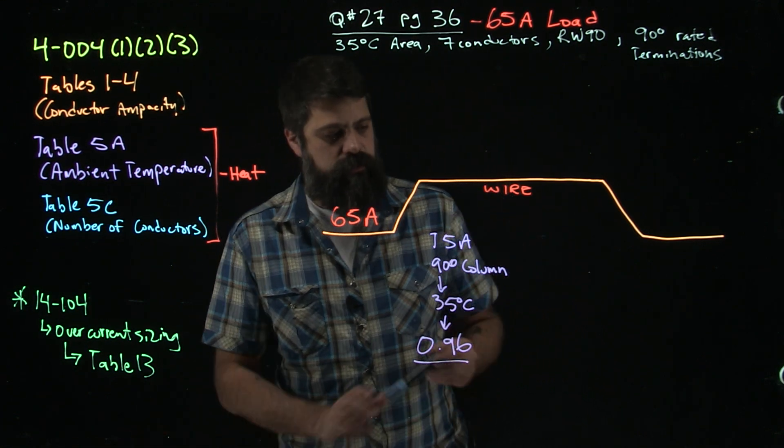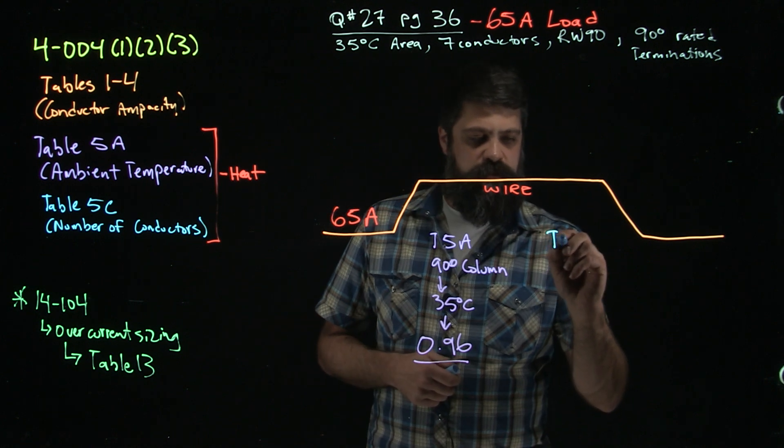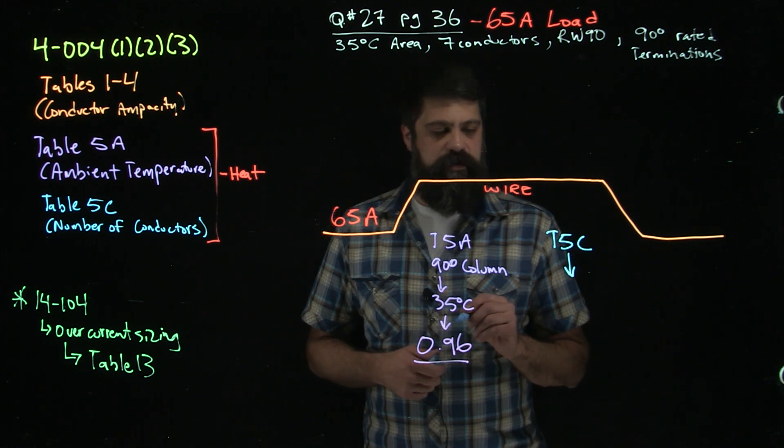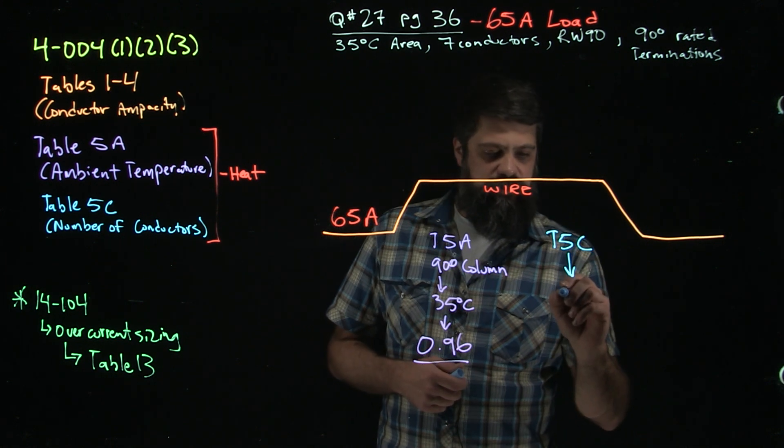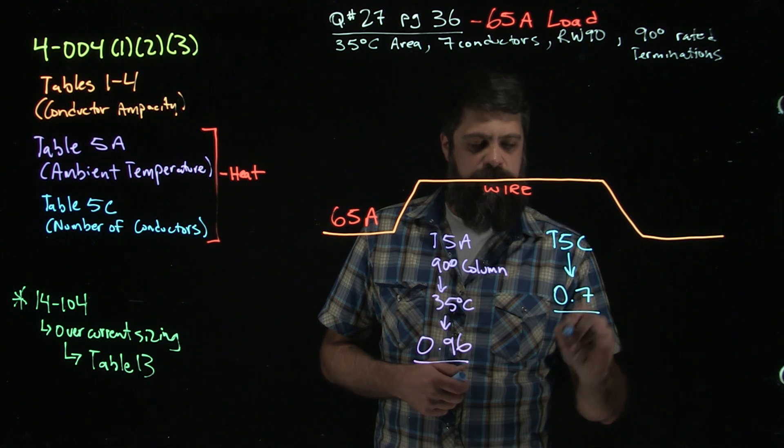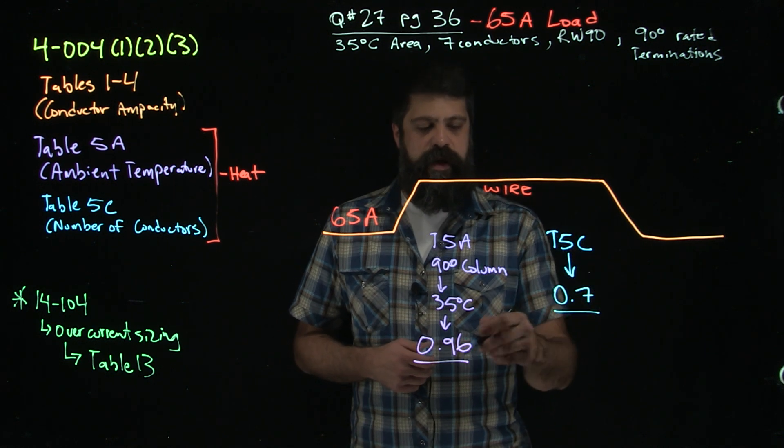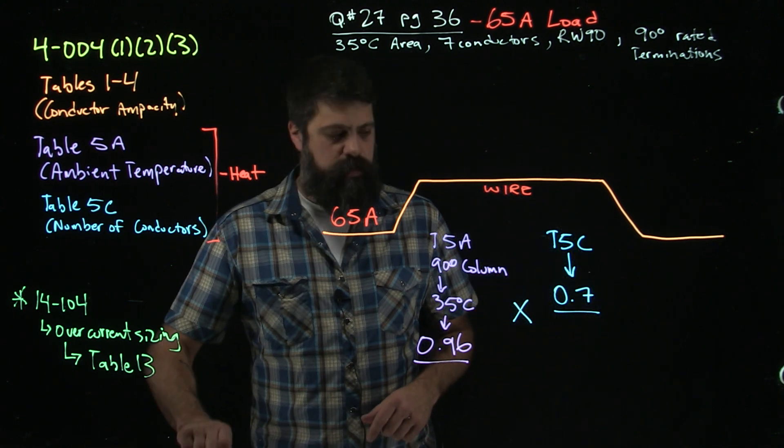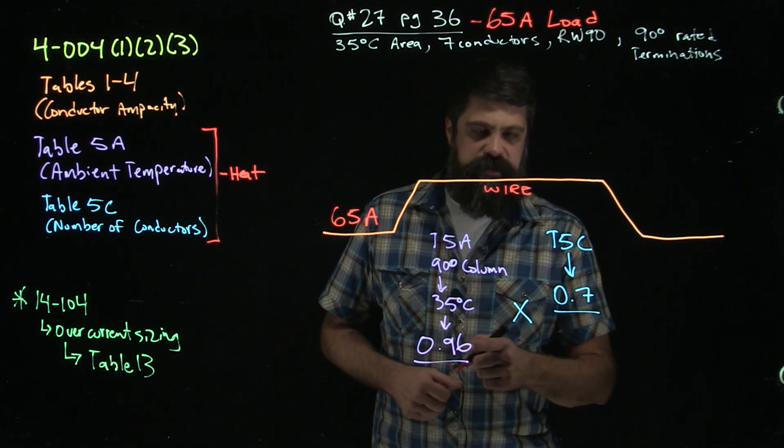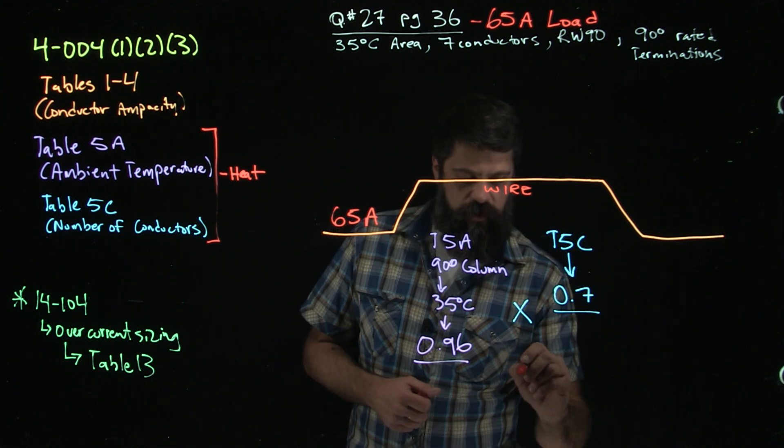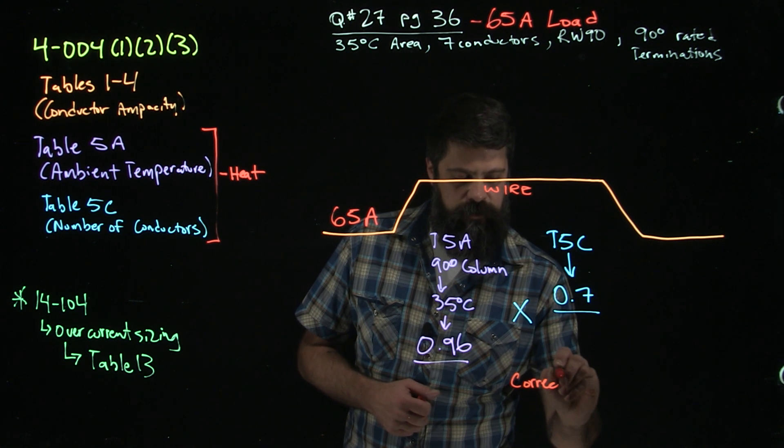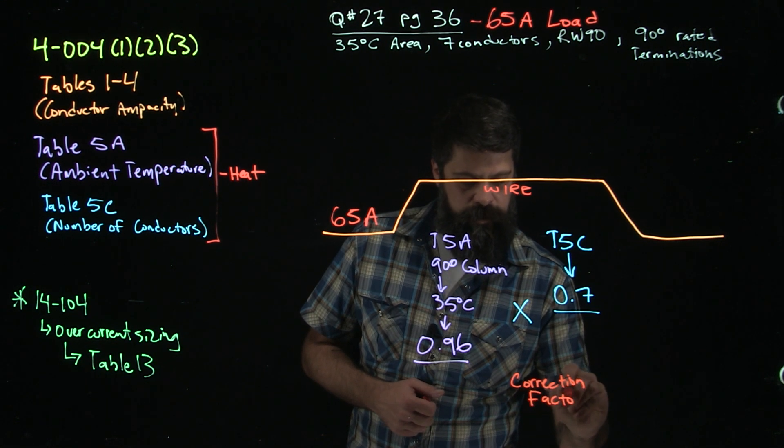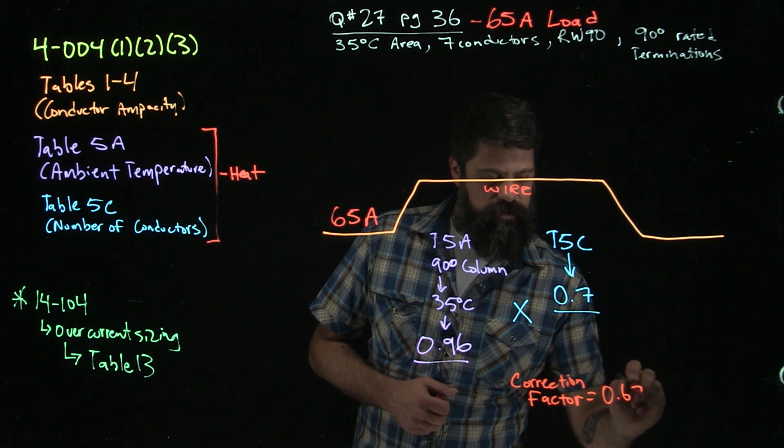Table 5C now just says how many conductors do I have. We look for that range, we find seven conductors, gives me a derating factor of 0.7. If I want to know the combined correction factor that I'm going to use for this overall, I'll multiply those two things together. 0.96 times 0.7 gives me an overall correction factor of 0.672.